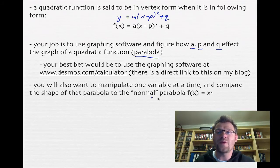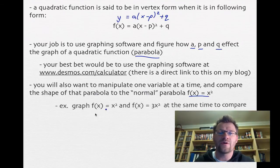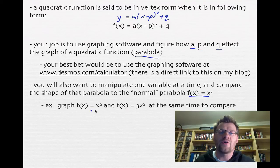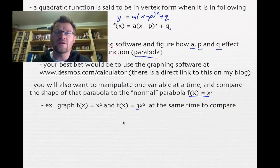You'll want to manipulate one variable at a time. Compare the shape of that parabola to what we call the normal parabola, which is f(x) or y = x². For example, you'll want to graph y = x² and y = 3x² at the same time so you can compare what effect that 3 has on the graph. Then do the same thing for values for p and q.